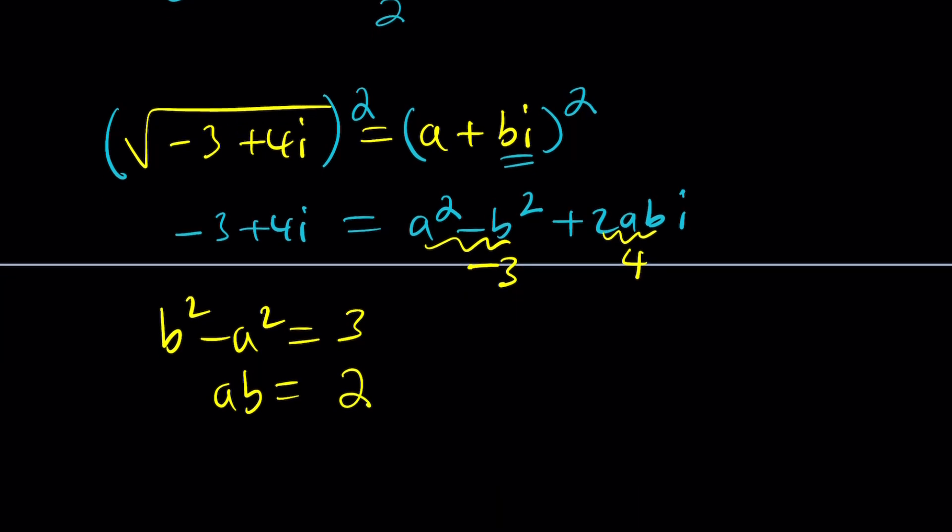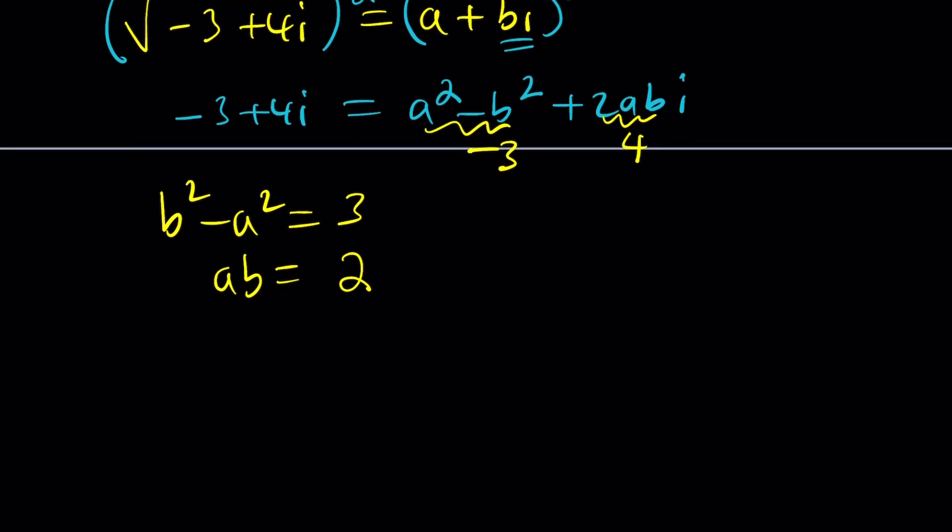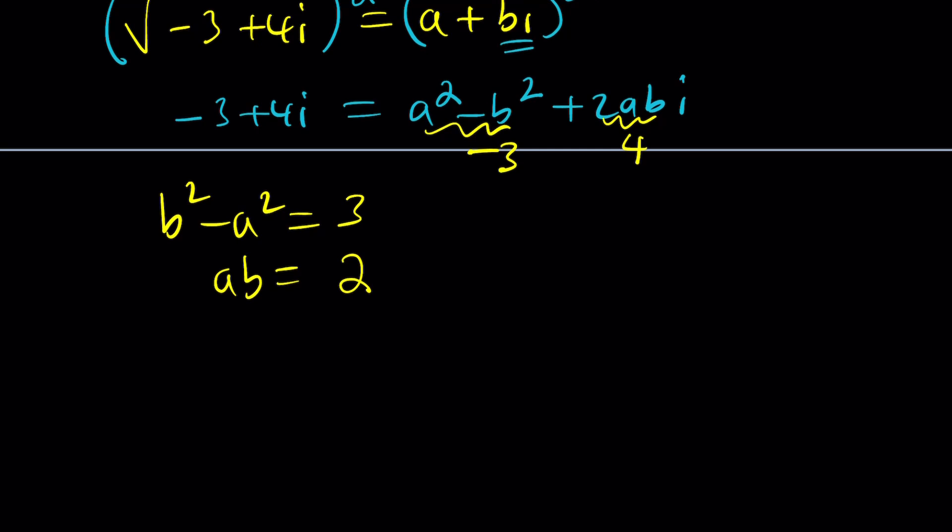Replace b with 2 over a, turn it into quadratic, so on and so forth. Do a lot of substitution. But wait a minute. Let's try to guess the answer, because it should be easy, right? Can we find two numbers whose product is 2? Hopefully, they are integers. And when we square them and subtract them, we should get 3. Yes. 2 and 1 work. Awesome, right?